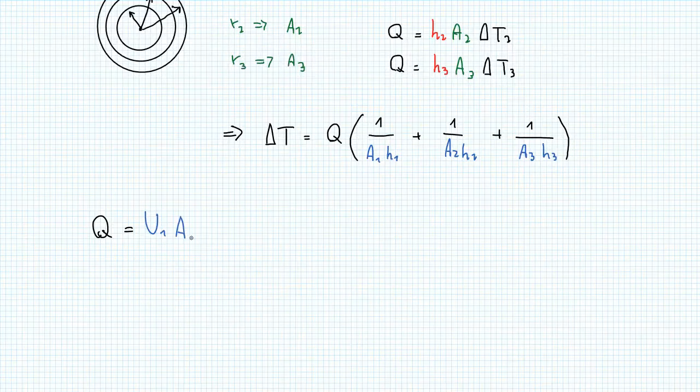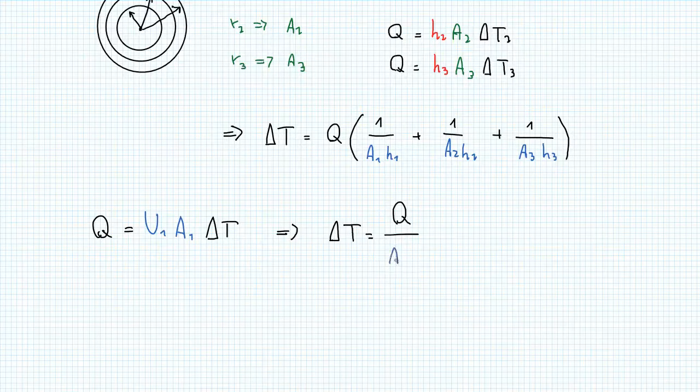So for example, if we wanted to use area 1, we'd have to write U1 times area 1 times the delta T, which gives us that delta T equals Q over A1 over U1.